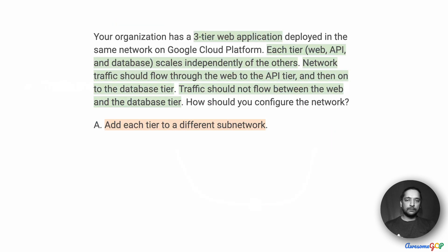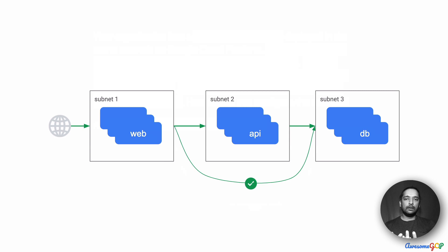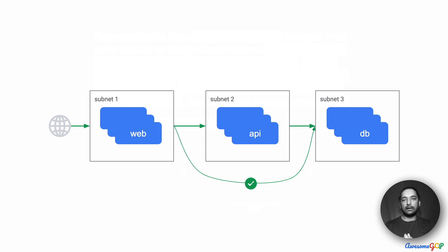With that understanding, let's look at each of the options. The first option is to add each tier to a different subnetwork. What this is recommending is that you put all the web VMs in one subnet, all the API VMs in another subnet and the database VMs in a third subnet. But that doesn't necessarily ensure that the traffic is flowing only from subnet 1 to 2 and 2 to 3, because subnets can talk to each other — subnet 1 can also send traffic directly to subnet 3.